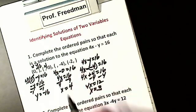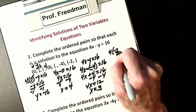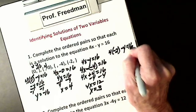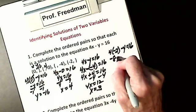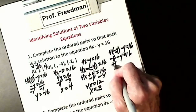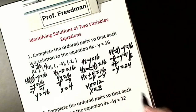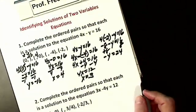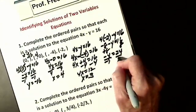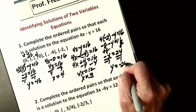The last one: if x is negative 2, I have 4 times negative 2 minus y equals 16. I get negative 8 minus y equals 16. Add 8: negative y equals 24. Divide by negative 1: y equals negative 24.